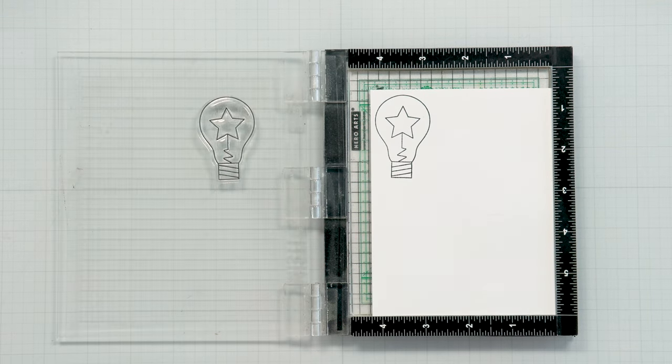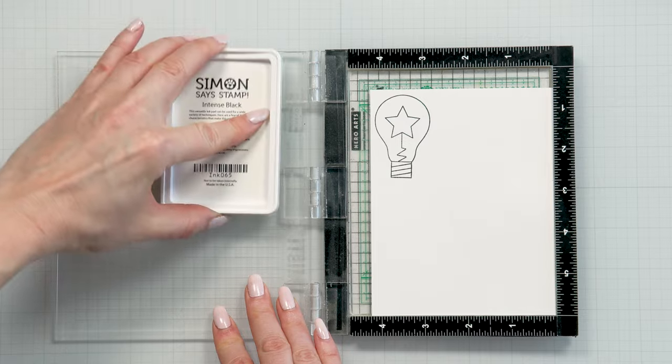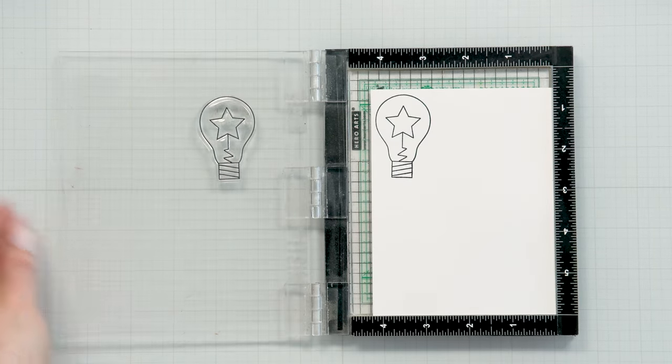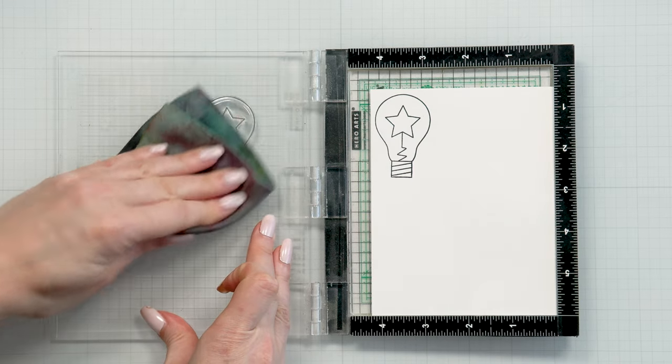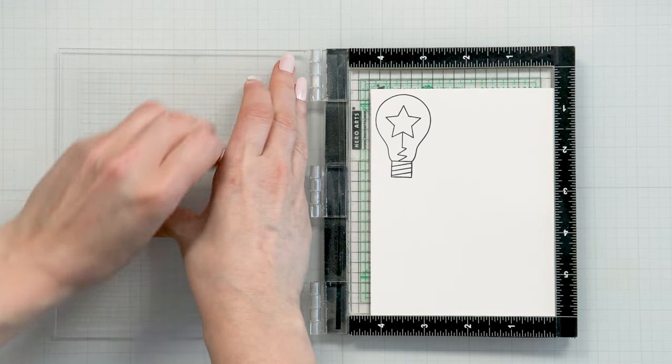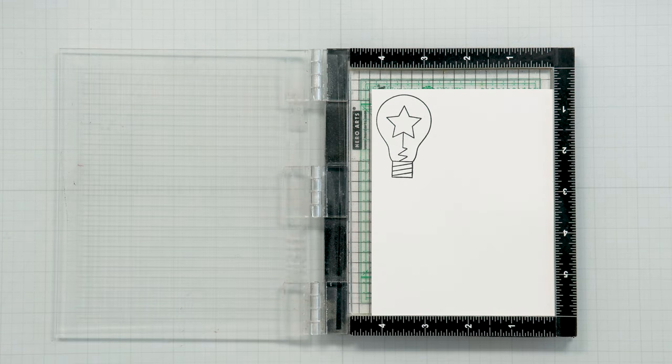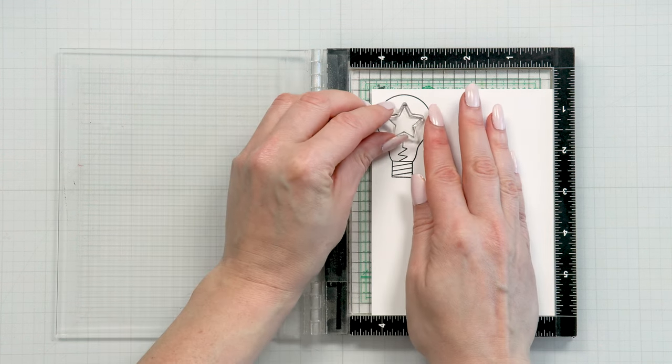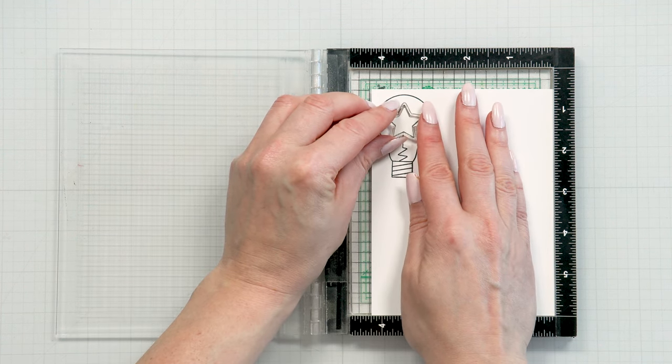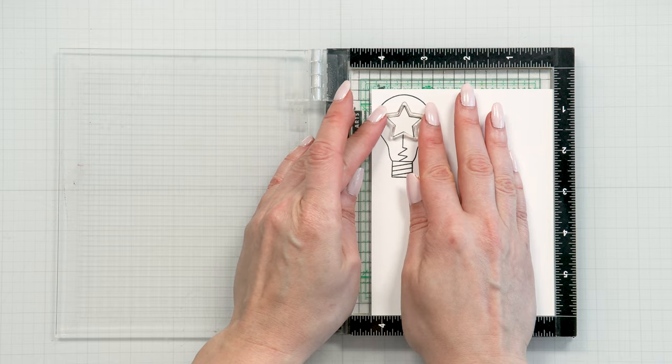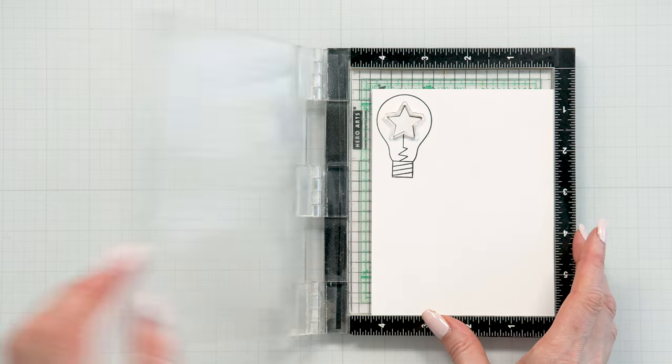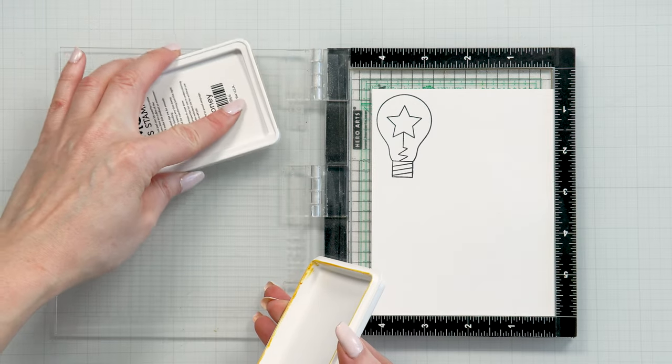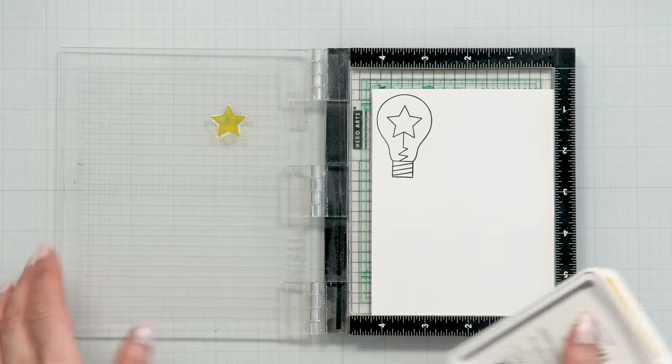Now for this particular card in this particular pattern, I am combining the stamp set with the coordinating dies, meaning I will cut the images out and I will pop them up on my card. And that's because I want to have a colored cardstock background behind the light bulbs. You can also do a simpler version of this card and skip using the coordinating dies. You can just stamp the images directly onto the background and that will save you a lot of time.